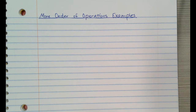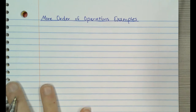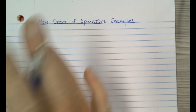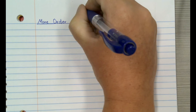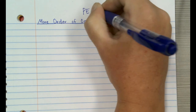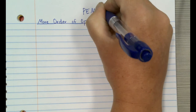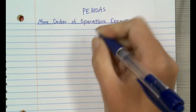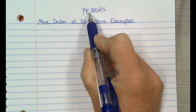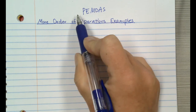So the first thing is I'm going to write my order of operations at the top so that I can refer to it. We know our saying is Please Excuse My Dear Aunt Sally: parentheses, exponents, multiply, divide, add, subtract — in that order.